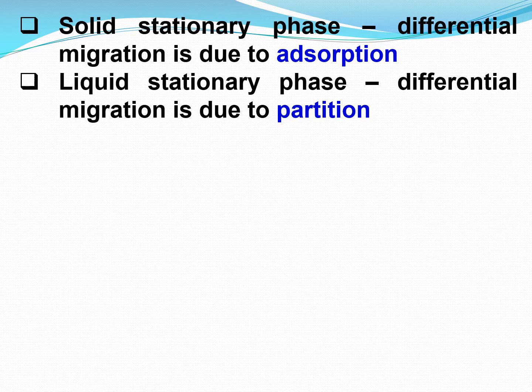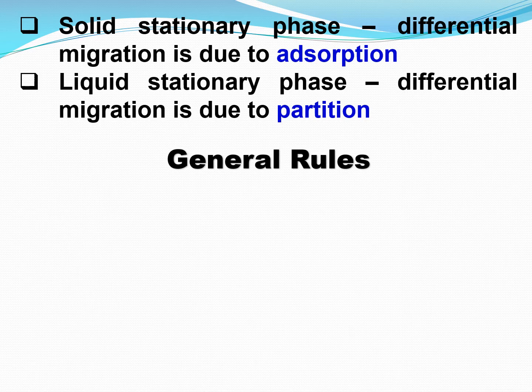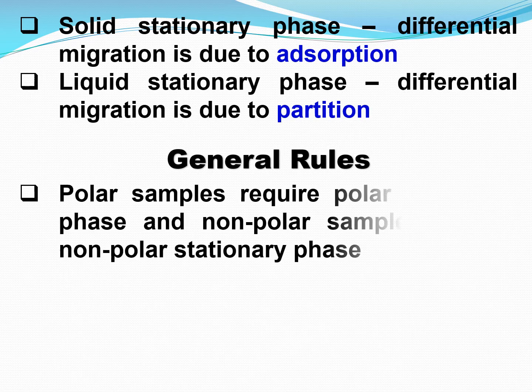So based on partitioning, differential migration occurs. Adsorption and partition are the mechanisms by which differential migration takes place — they are the mechanisms underlying any chromatographic separation.